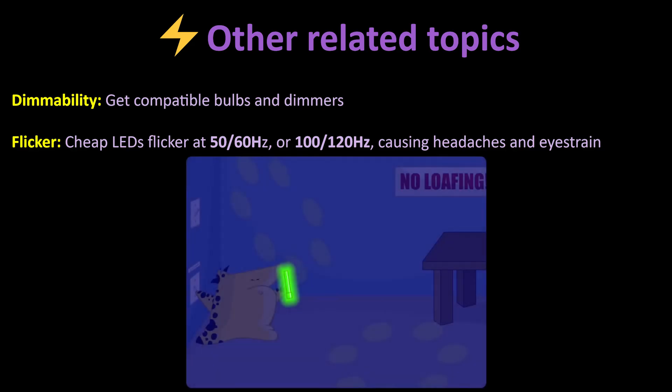Flicker. Cheap LEDs can produce invisible high-frequency flicker, which can cause headaches or eye strain in sensitive people. The worst LED solutions flicker at 50 or 60 hertz, depending on your electrical grid, which is very visible. Many other cheap LED solutions flicker at 100 or 120 hertz, which is still not great, depending on the modulation. Better LED solutions use better drivers with capacitors or higher frequencies that fool the human eye into seeing continuous light.